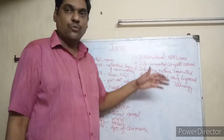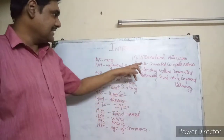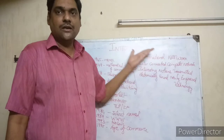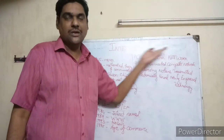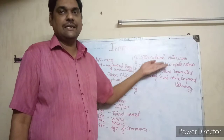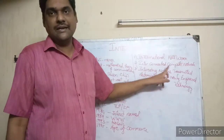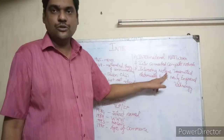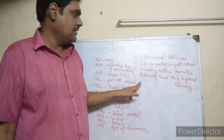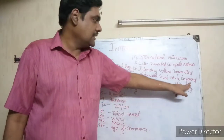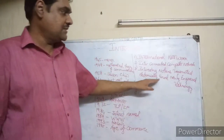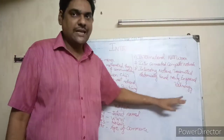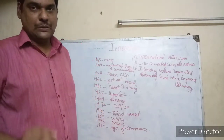In your book there are three expansions of the word internet. The first expansion is International Network. The second expansion is Interconnected Computer Network. The third expansion is Interesting Notions Transmitted Electronically Around Newly Engineered Technology. This expansion may come in a one-mark question.